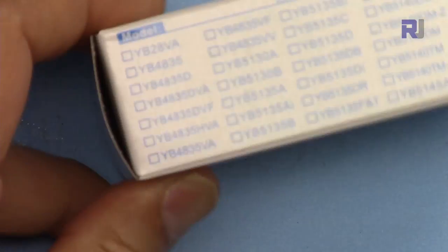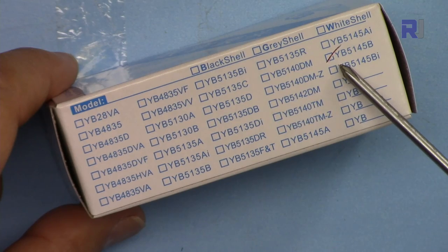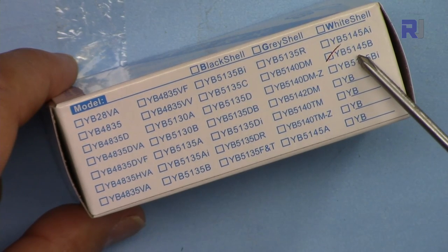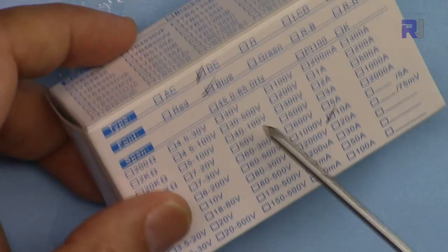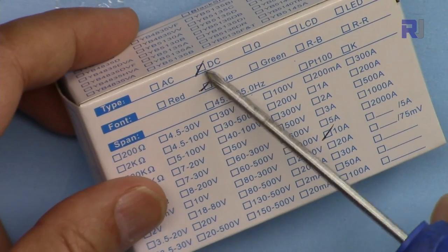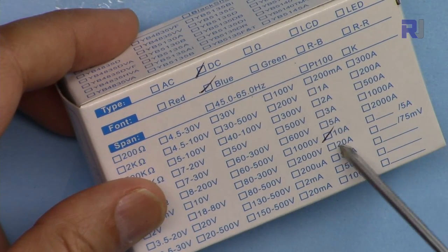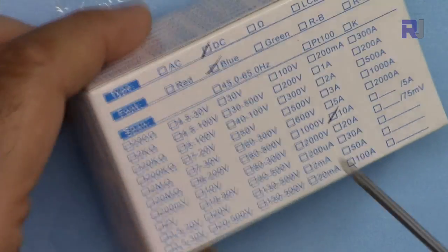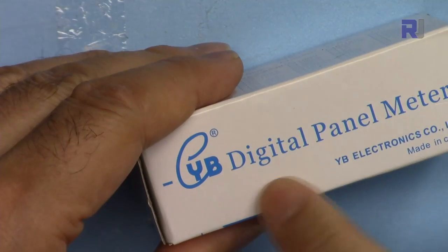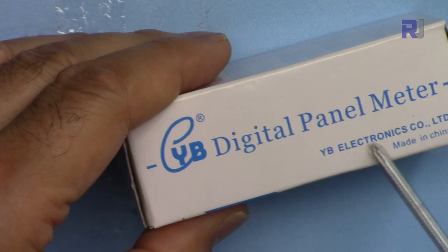Just open this package, as you can see it has been checked as YB5145B and this one here at this point it has been labeled as DC and blue and the amount of current is 10 ampere. YB digital panel meter from YB electronic.